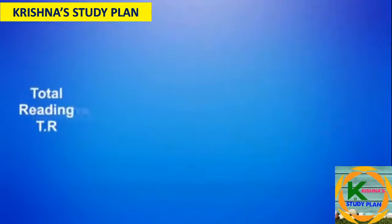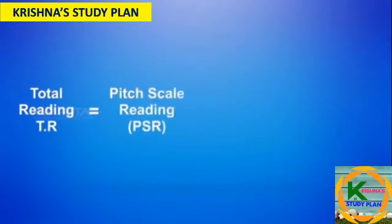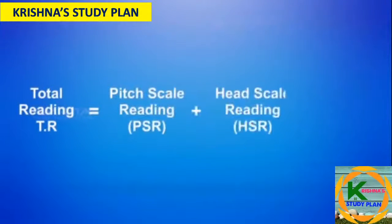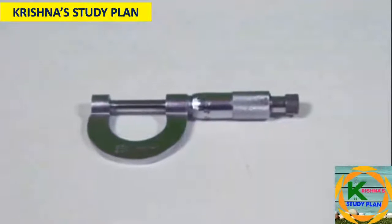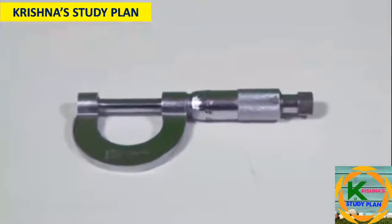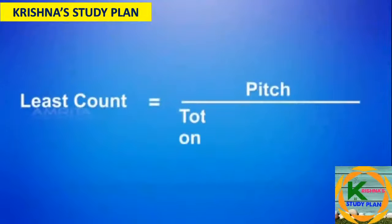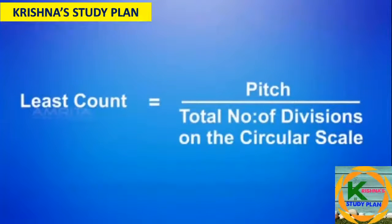Principle: Dimension of an object can be measured using the relation — Total Reading (TR) is equal to Pitch Scale Reading (PSR) plus Head Scale Reading (HSR) into Least Count (LC). The Least Count of the instrument can be found using the relation: Least Count equals Pitch divided by the total number of divisions on the circular scale.